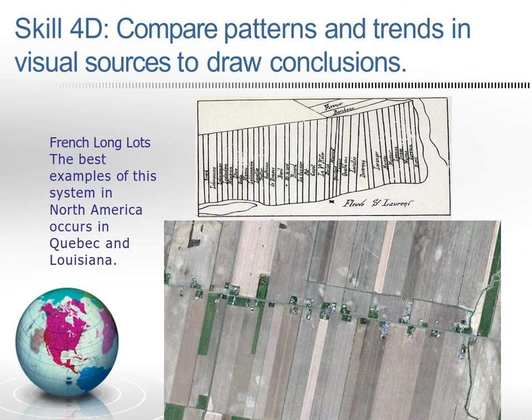And then there are French long lots — the best examples in North America occur in Quebec and Louisiana. These are long rectangular lots that typically border and provide access to a water source.